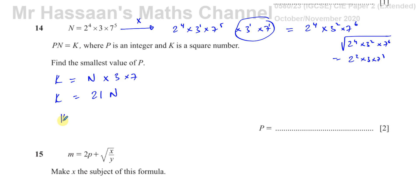All right, so that means p must be, if they say p n is equal to k, p must be 21. We have to multiply this by 21 to make it into a square number.